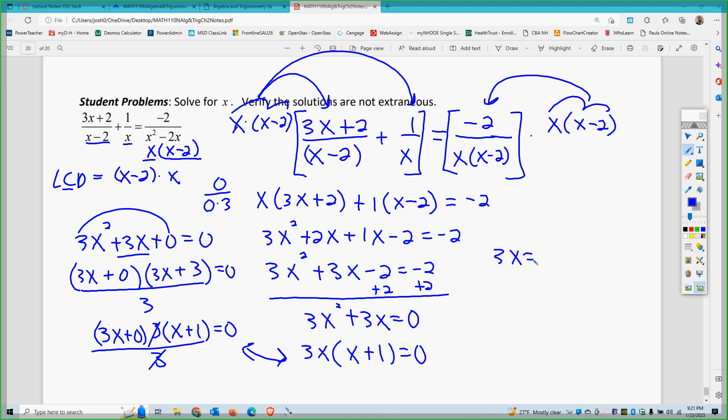3x equals 0 and x plus 1 equals 0 in either case. If I divide by 3, x is 0. If I minus 1, x is negative 1. If I go back to the original problem, I cannot plug in 0 because if I do that it gives me a zero denominator. I can plug in negative 1 though, that actually will work. So that's extraneous and this is my actual solution. Negative 1 is the solution.